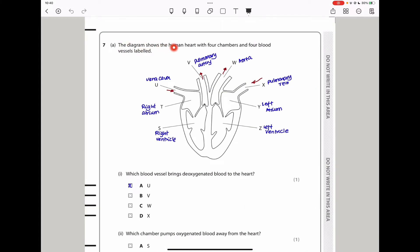Question 7 says the diagram shows the human heart with four chambers and four blood vessels. Here we can see they've given us S, T, U, V, W, X, Y, and Z. The right atrium is connected to the vena cava, bringing deoxygenated blood from the rest of the body. The pulmonary artery is taking deoxygenated blood to the lungs. This one here is taking oxygenated blood to the rest of the body, and this is bringing oxygenated blood from the lungs to the left atrium. And finally, this is the left ventricle.